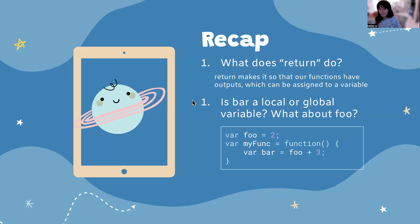For our first question, return makes it so our functions have outputs, which can be reassigned to a variable. And I like to think of them as an execution command. So they're kind of like the go, you can compute. The second question, is bar a local or global variable? What about foo?